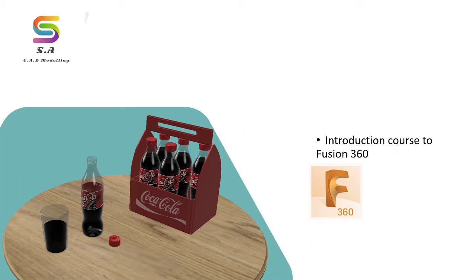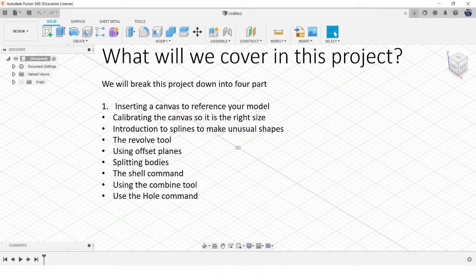Hey everyone, welcome to the second part of an introduction course to using Fusion 360. In the first part we made our Lego brick and a scene to go along with it - a little introduction to the user interface and basic sketching. In this set of videos we're going to look at modelling using a few different tools to make shapes that aren't all straight-edged, a little bit more curved and complex. The video is going to be broken down into four parts, like the first one.